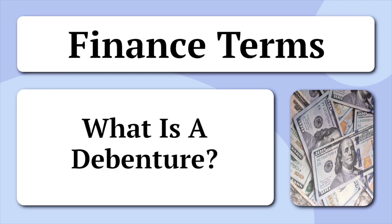Today, let's ask the question: what is a debenture? A debenture is a type of debt instrument that represents a long-term borrowing by a company or government entity. It is a form of debt security that acknowledges a loan and specifies the terms of interest payments and the repayment of the principal amount upon maturity.